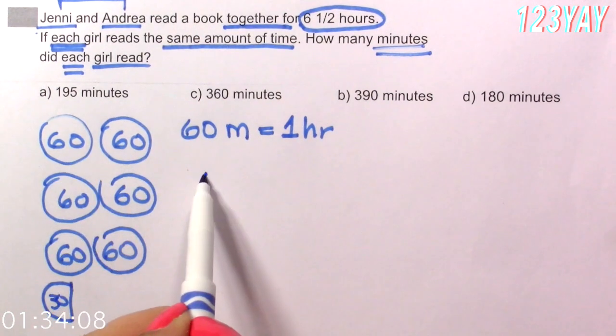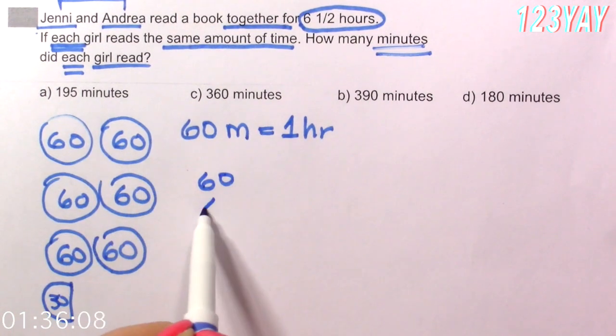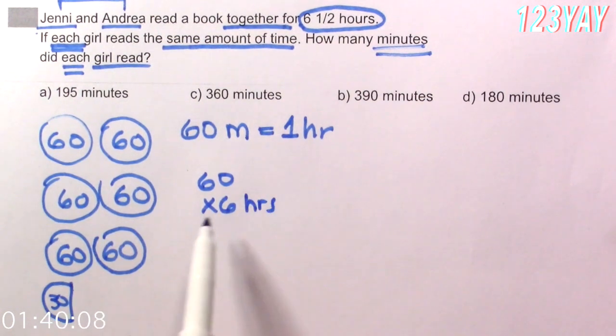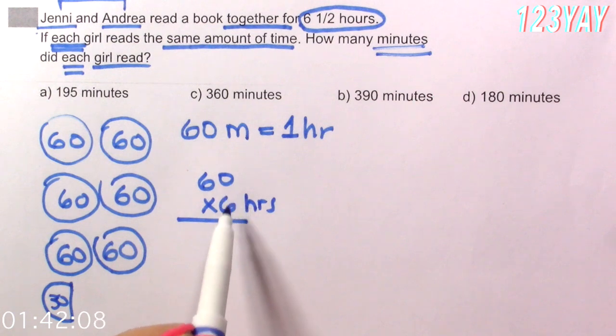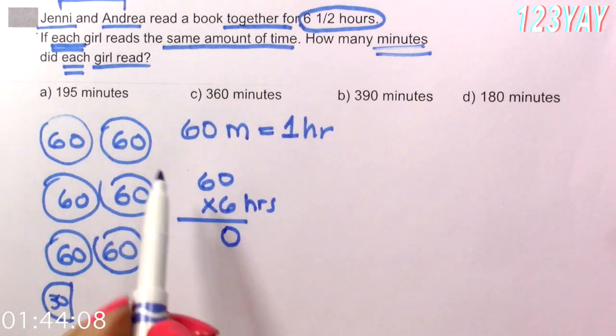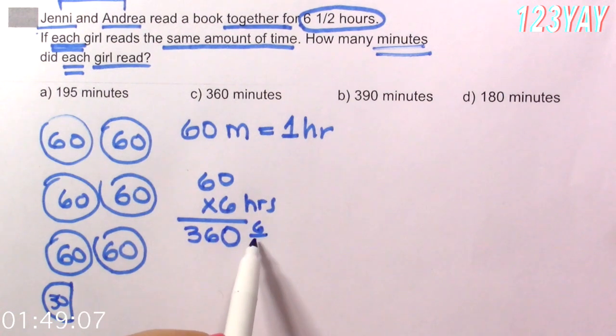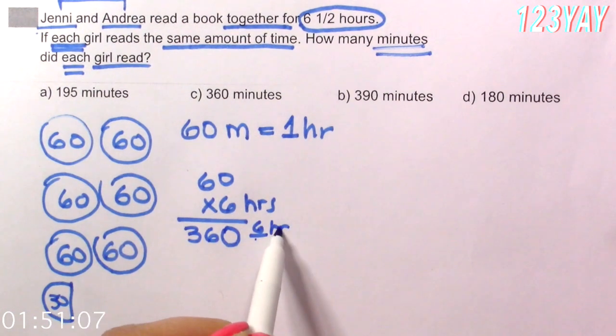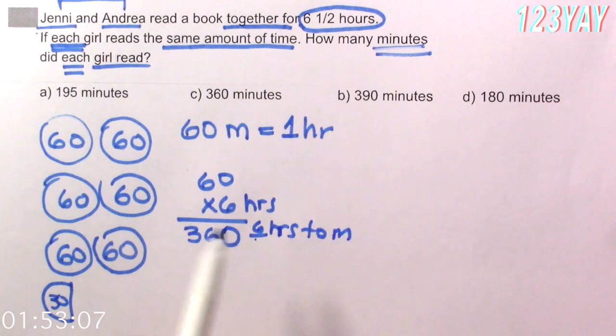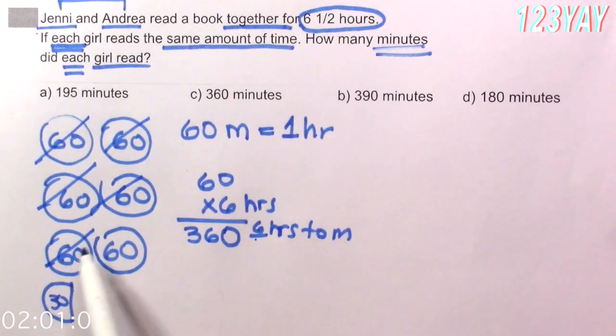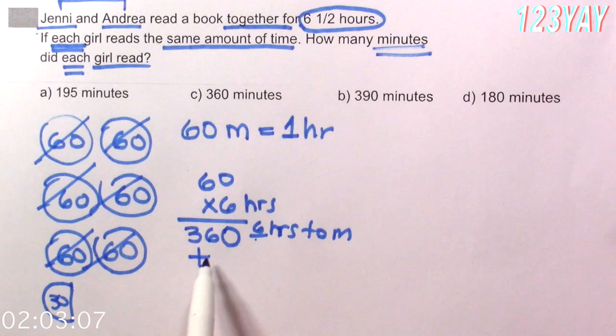And we have 6 times 0, 0. 6 times 6, 36. These are 6 hours, 360 minutes. Are we done here? No. We have to add these 30 minutes. Let's scroll this out.